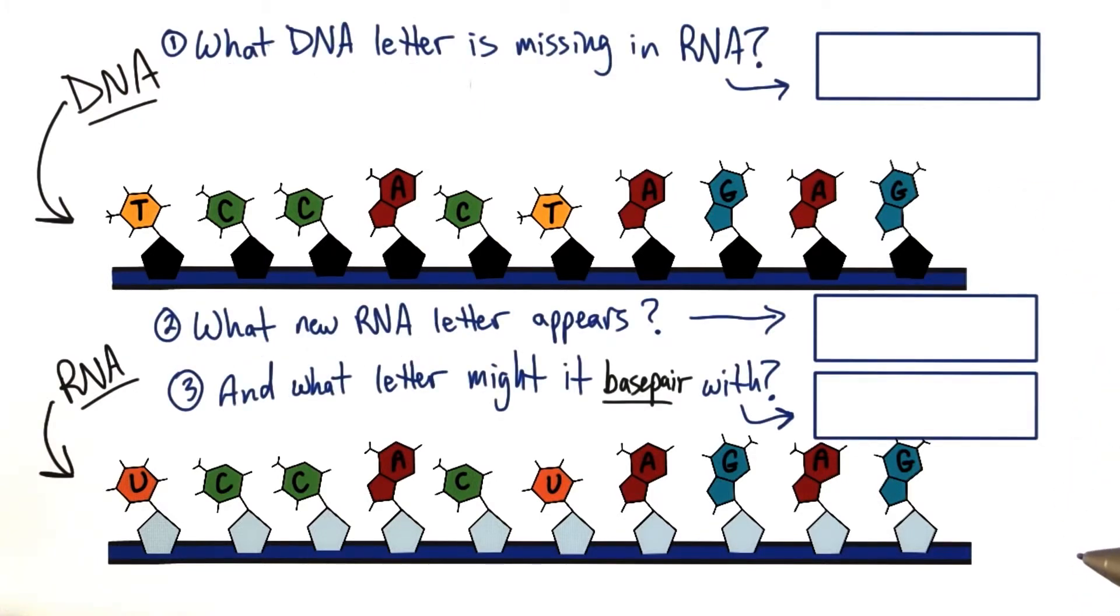Just making a few comparisons here, I want you to see if you can answer three questions for me. I want you to look at the strands and tell me what DNA letter is missing in RNA. I want you to tell me what new RNA letter appears. And I want you to tell me what letter that new RNA letter might base pair with. Go ahead and see if you can answer those three questions in the text boxes here.